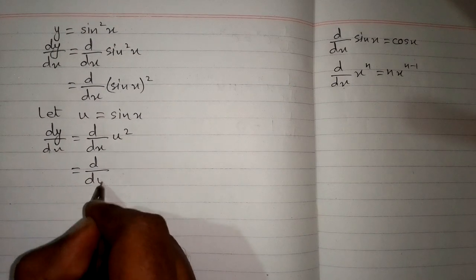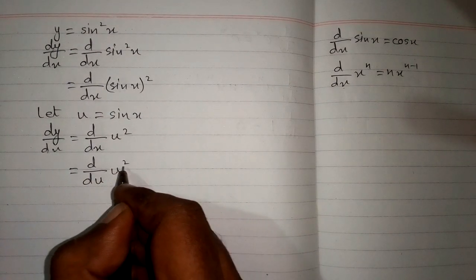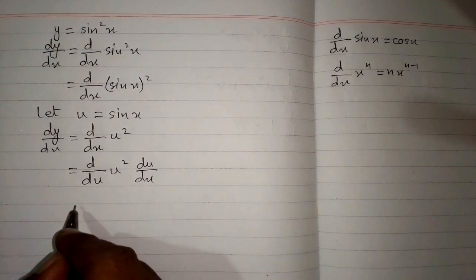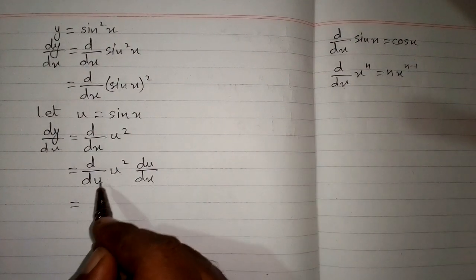So we write du in order to differentiate u², then multiply by du/dx. This is called the chain rule of differentiation. Now we can apply this formula because the variables match.